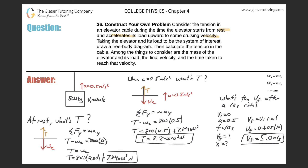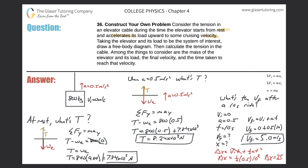We can also find the displacement. In 10 seconds, how far does the elevator travel? Using the formula: change in displacement equals initial velocity times time plus one-half times acceleration times time squared. The initial velocity is zero, so: Δy = ½ times 0.5 times 10², which is ½ times 0.5 times 100 = 25 meters. This is displacement in the y-direction.